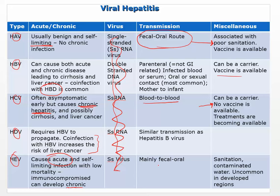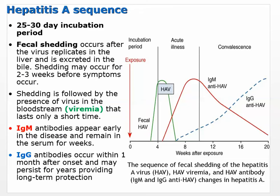When we talk about fecal-oral transmission, we're looking at sanitation and regions that have difficulty with sanitation. The different hepatitis viruses are all different viruses — not all the same. Some have very different structures: single-stranded, double-stranded. These different classifications are based on the fact that they are different viruses doing the infection.